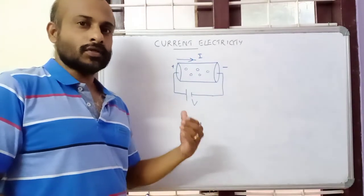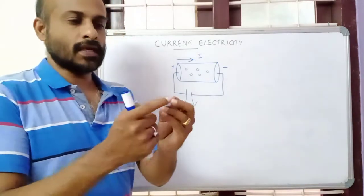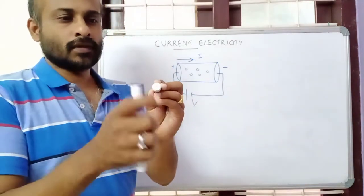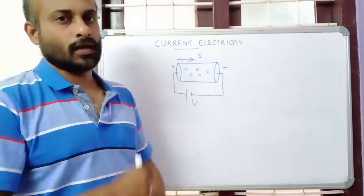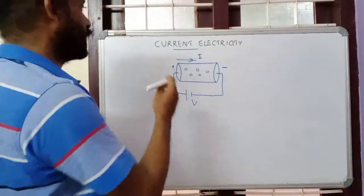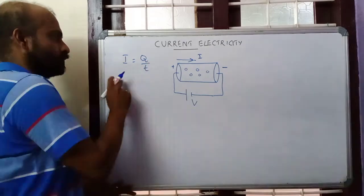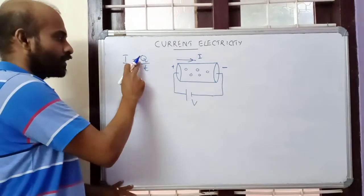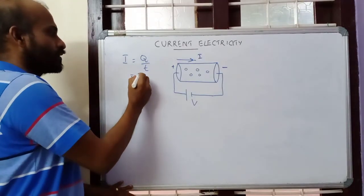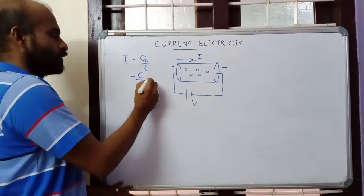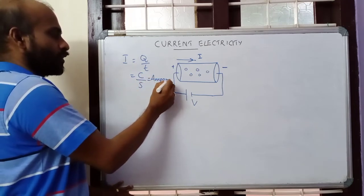Electric current is defined as the flow of electrons through a conductor in a particular direction, normal to the area cross section. We will consider current flowing perpendicular to the area cross section. Current is equal to charge divided by time — charge means the total charge flowing through the conductor. Current has SI unit coulomb per second, otherwise known as ampere.